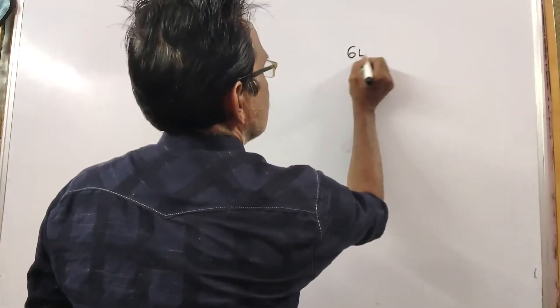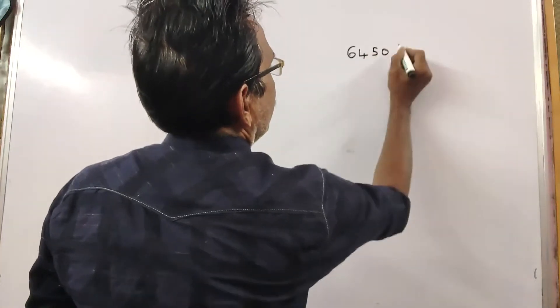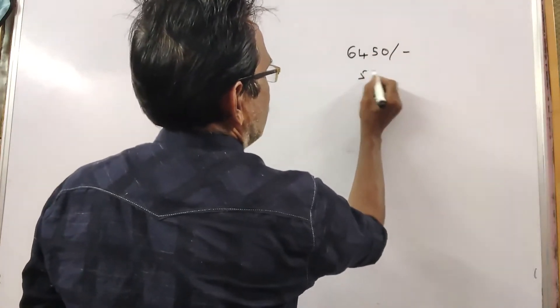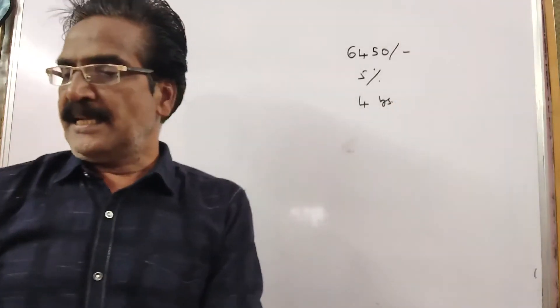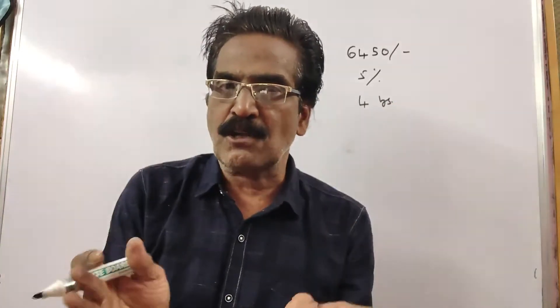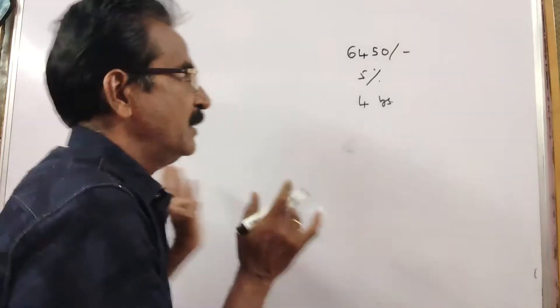See, total amount due is Rs. 6450, rate of interest 5%, due in 4 years. See friends, let us say the annual installment is Rs. 100.